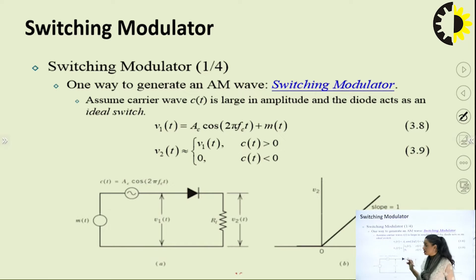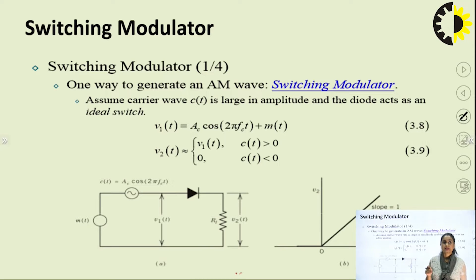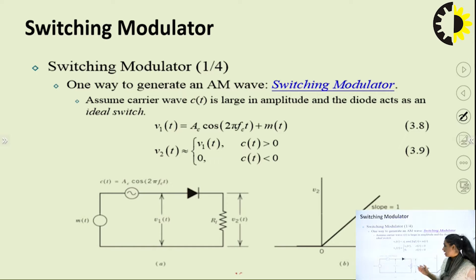Here in the switching modulator, again we can use a diode or a transistor. The difference between a square law modulator and a switching modulator is that in a switching modulator, the passive device — which could be a diode, transistor, or any other non-linear device — acts as a switch. Whereas in a square law modulator, the same device acts as a non-linear device which works by squaring the input value applied to it. We must keep in mind that in a switching modulator, we are using the device as a switch, and we are familiar with the p-n junction diode which can act as a switch.